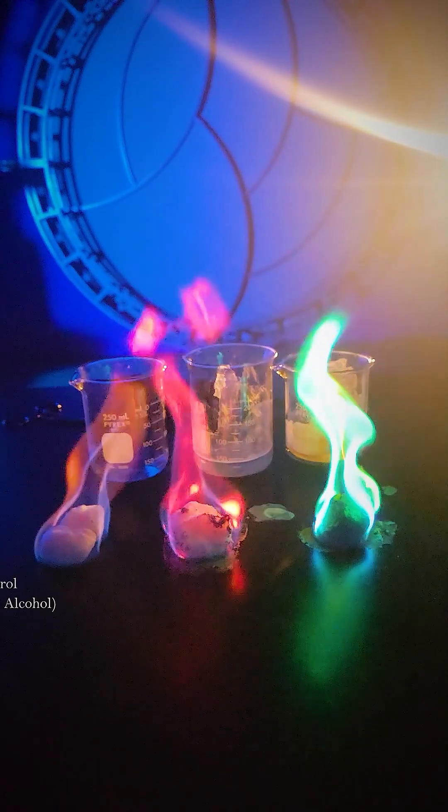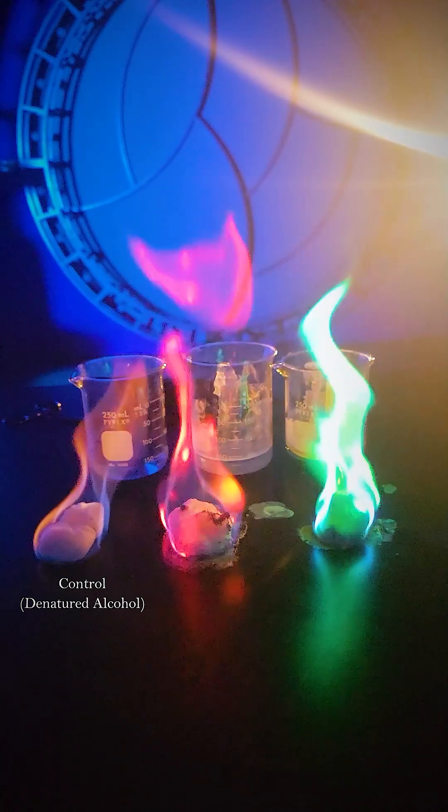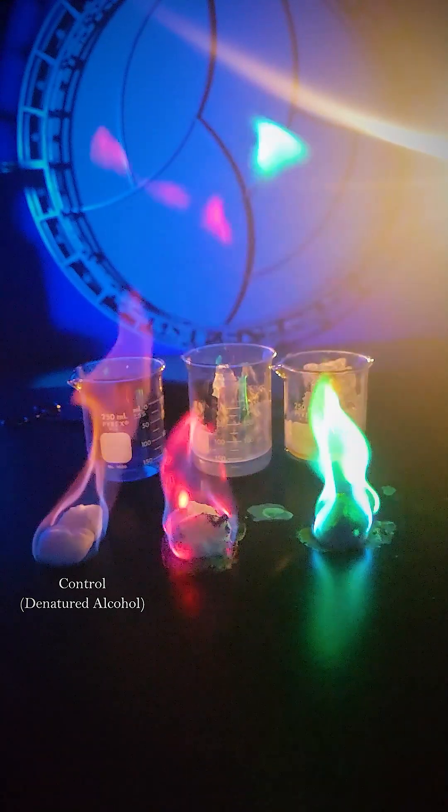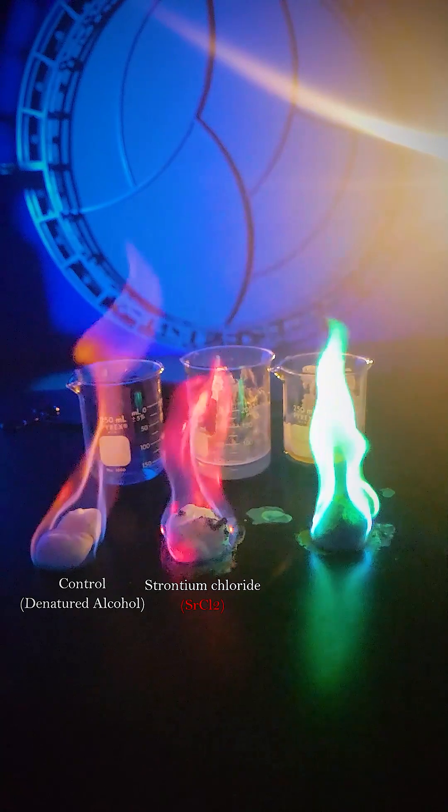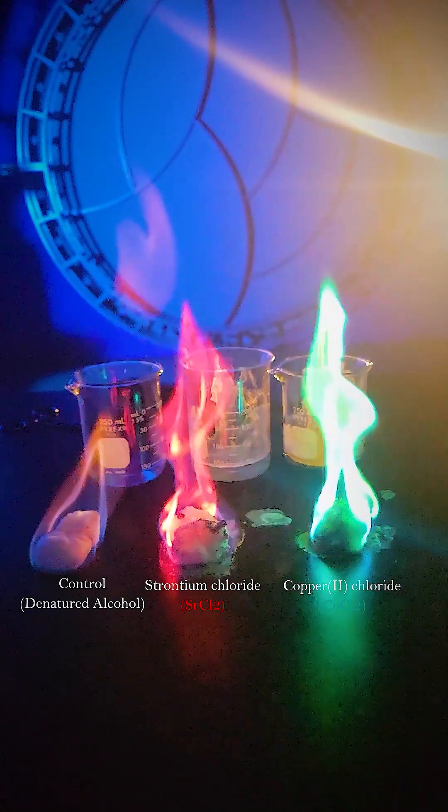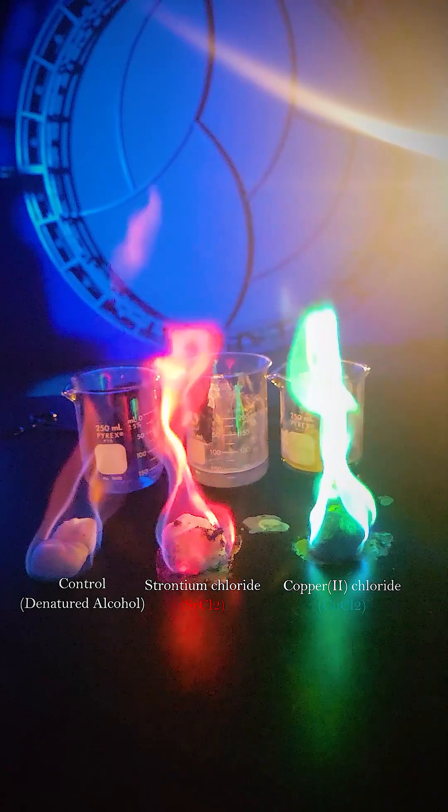So our control here burns a much more traditional blue, almost orange color - traditional for most fires. But as you can see with our strontium chloride and our copper 2 chloride, they're very drastically different. One being very bright red, one being a very vibrant green.